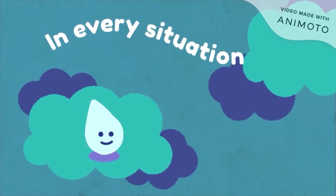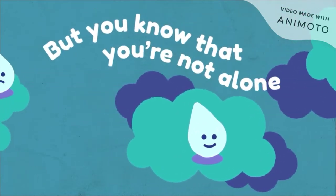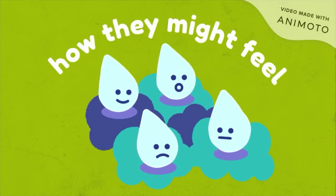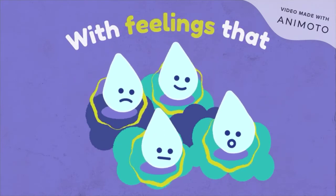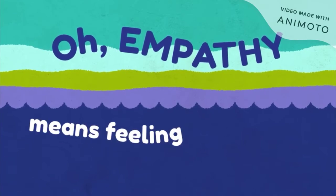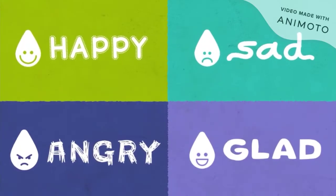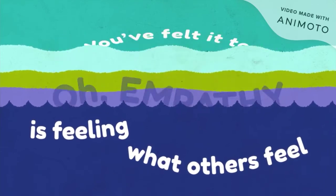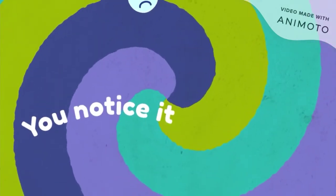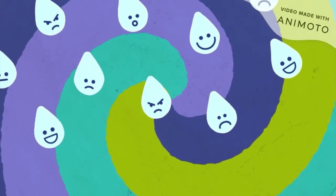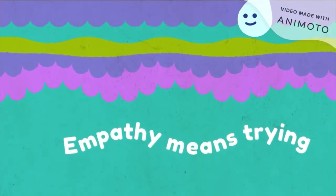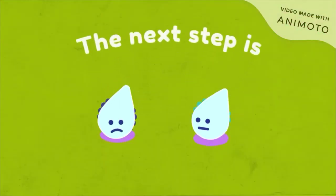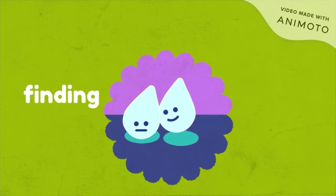In every situation, your feelings mean so much to you, but you know that you're not alone — there's other folks with feelings too. So when you get together, try to understand how they might feel, because they might have their own ideas with feelings that are just as real. Empathy means feeling what others feel — you're supposed to notice happy, sad, angry, glad — you notice it and you understand. Empathy means trying to understand how another feels; see the clues on a person's face, then wonder what's their point of view. The next step is compassion — that's being kind and finding ways to help a friend. That's easy when you understand.